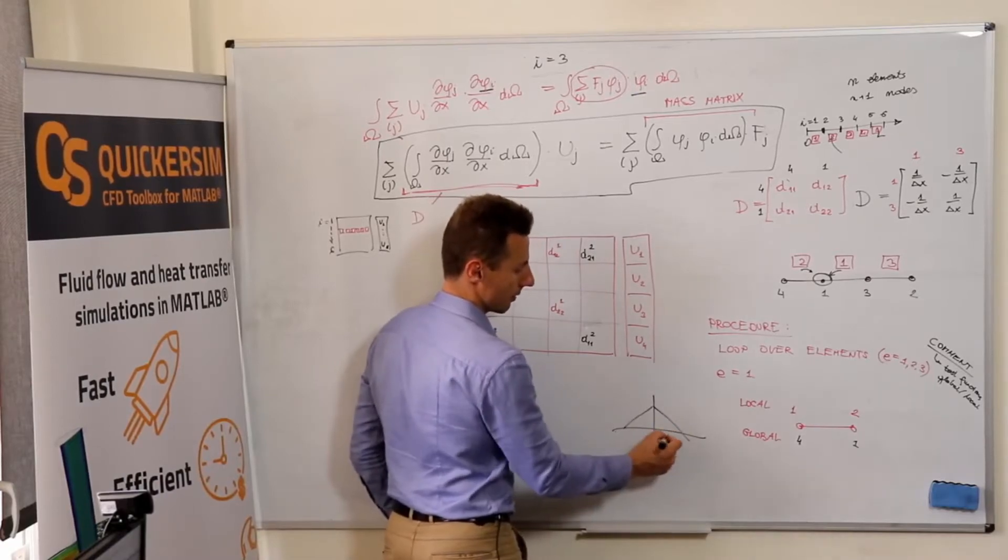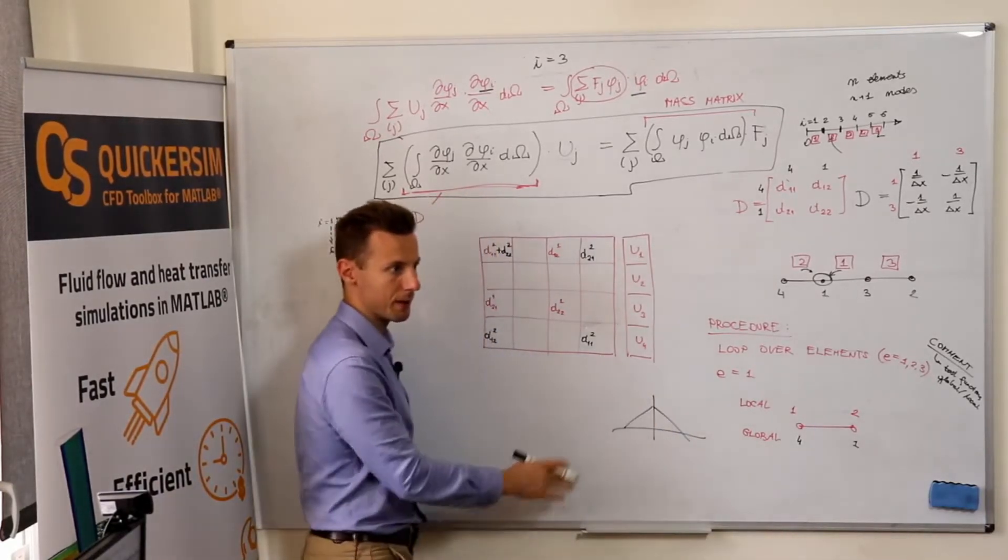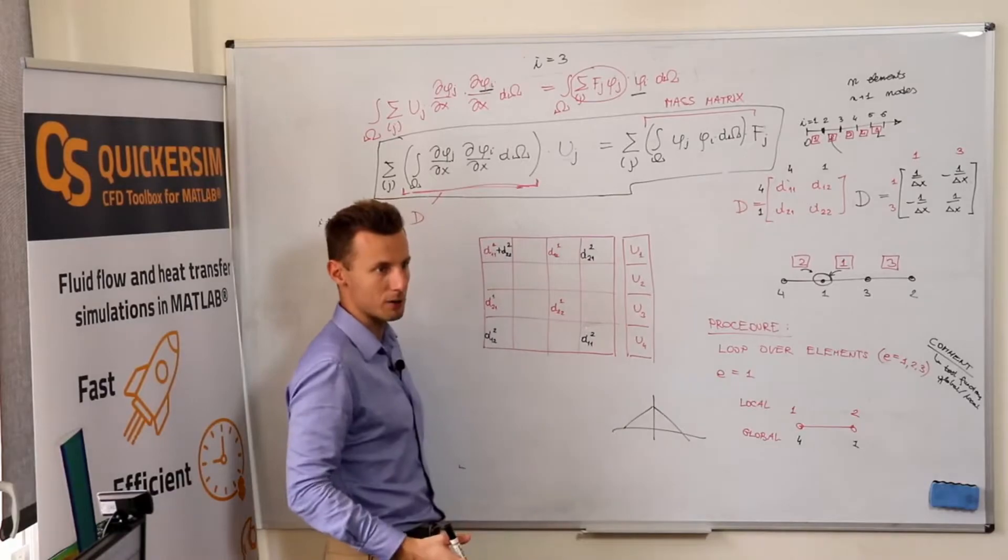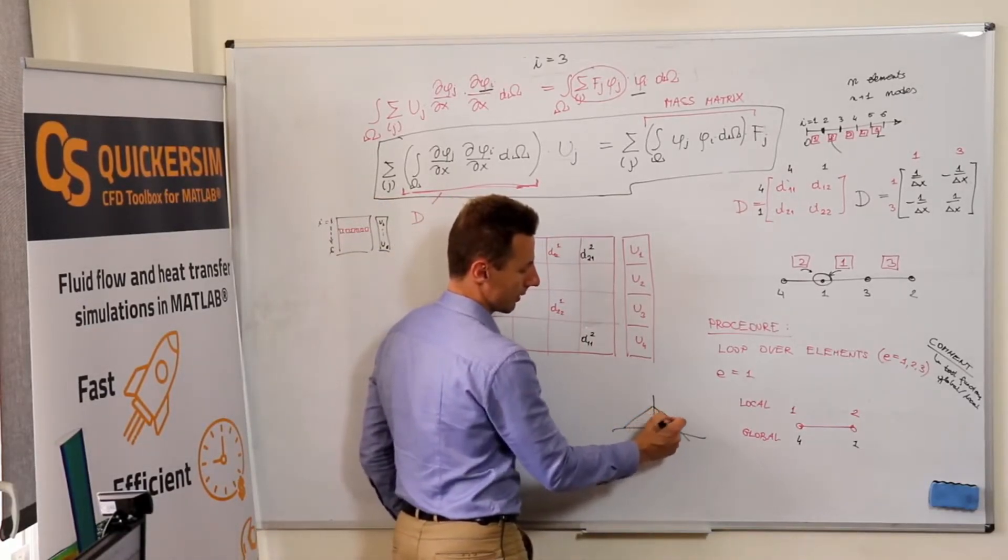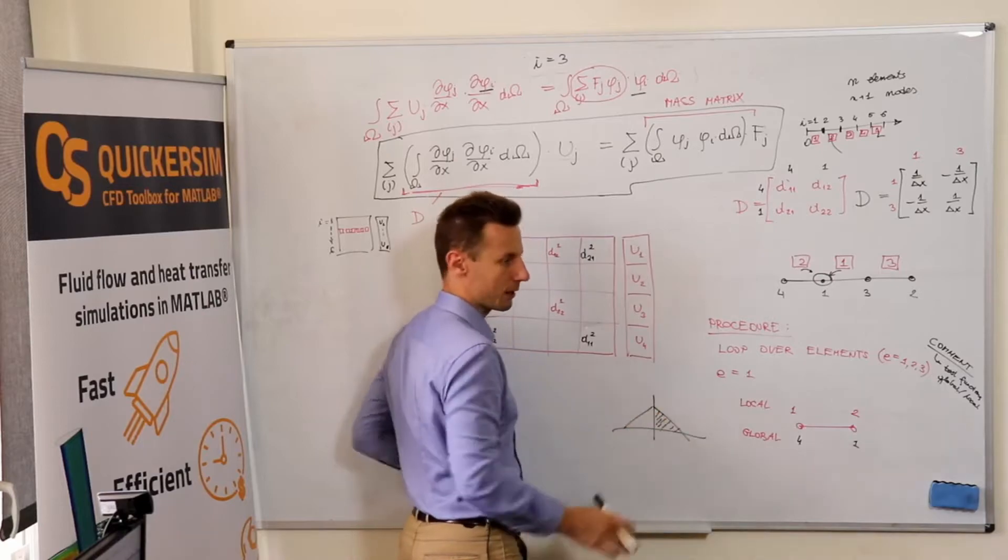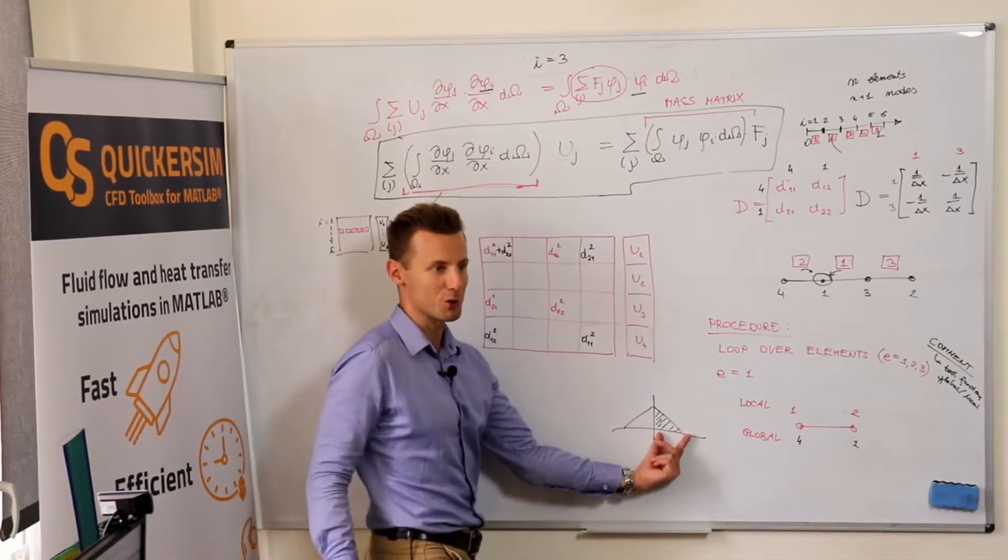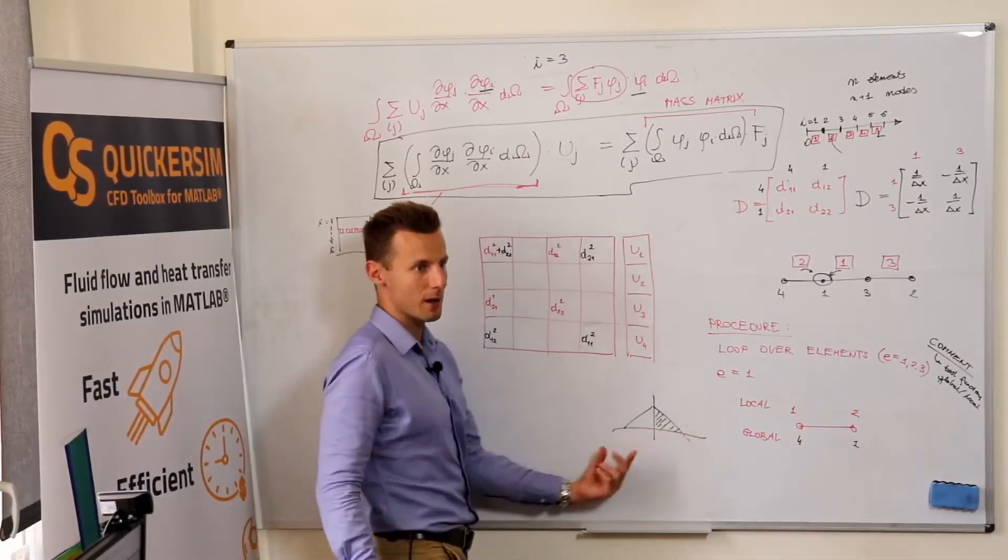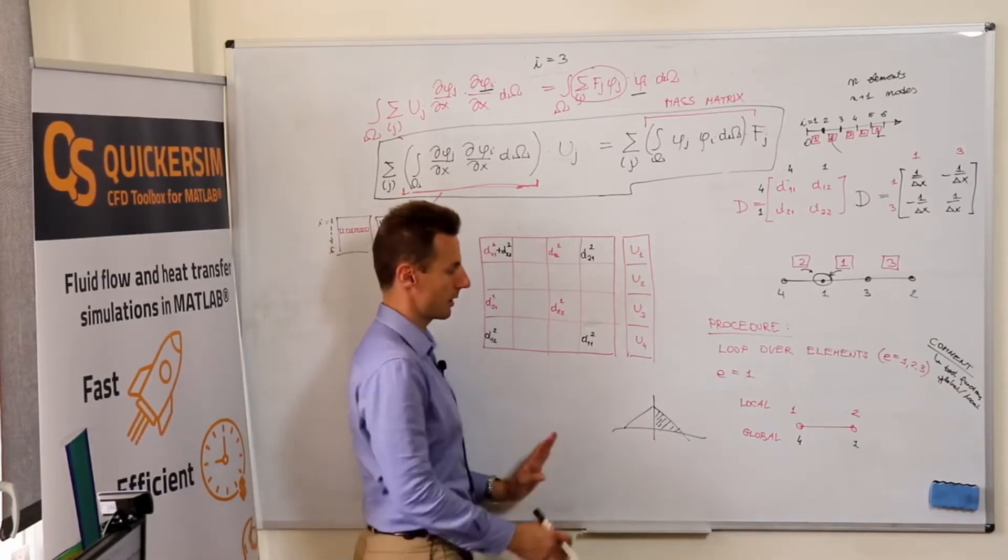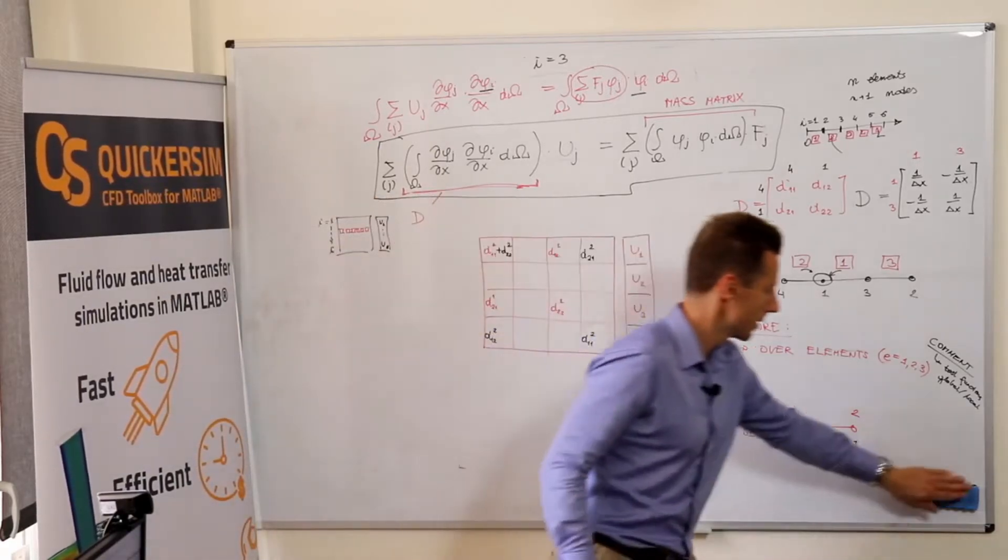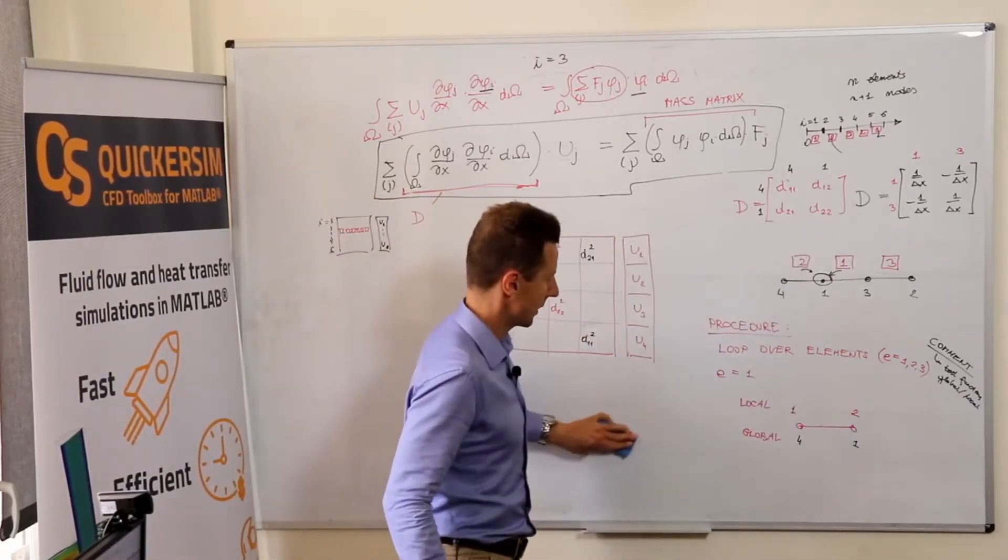And this is how you actually have rendering the equations that we know that the shape function is, that the test function is a global test function. But first we have only computed the part of the integral coming from this portion of the test function, and then in the other element the other portion of the test function. And we are adding the contributions in the global matrix.